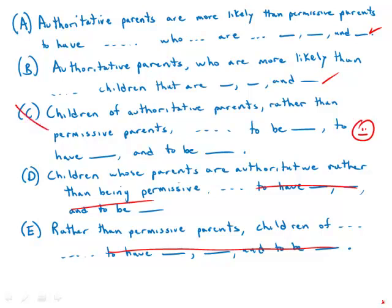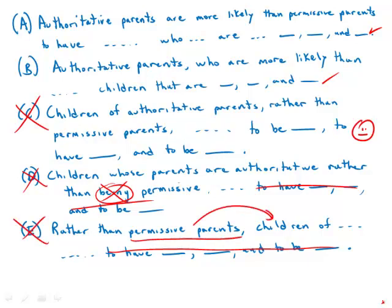So this is an incorrect comparison. 'Children whose parents are authoritative rather than being permissive' — that word 'being' is problematic. 'Rather than permissive parents, children' — here again, comparing the permissive parents to the children. So that's incorrect.